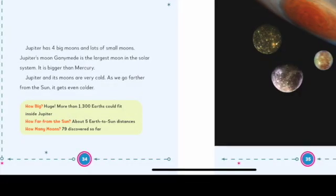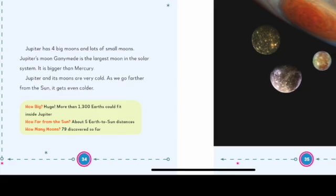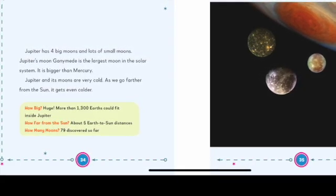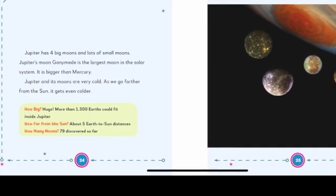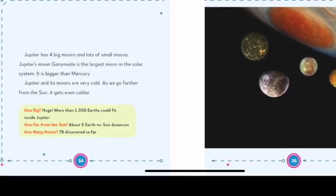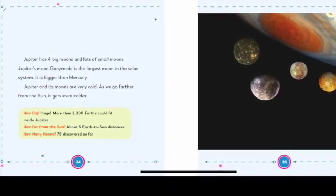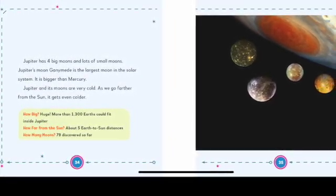Jupiter has four big moons and lots of small moons. Jupiter's moon, Ganymede, is the largest moon in the solar system. It is bigger than Mercury. Jupiter and its moons are very cold. As we go further from the Sun, it gets even colder.